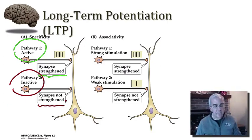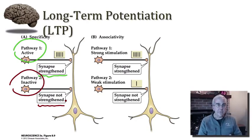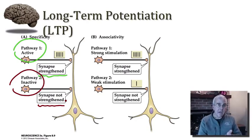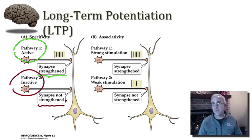So in order for there to be potentiation of a pathway, there must be activity at that synapse between the pre- and the post-synaptic partner. Meanwhile, other parallel pathways that are not active will not be strengthened.